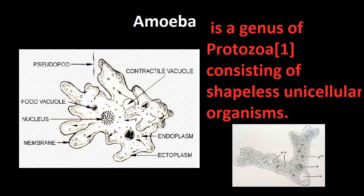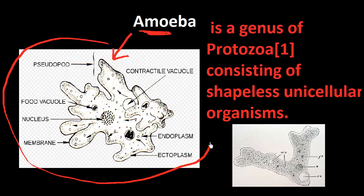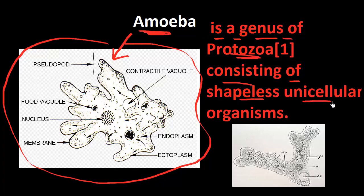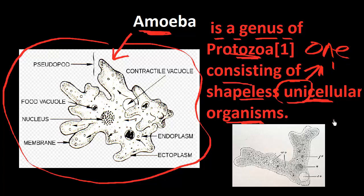Our science word for today is amoeba, and this is an amoeba right over here. The scientific word is a genus of protozoa consisting of shapeless unicellular organisms. 'Uni' means one, so it's a single cell — one cell — organism, a living thing, a cell.